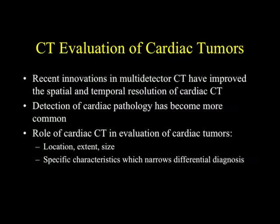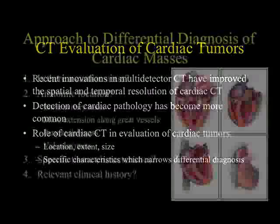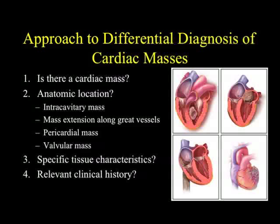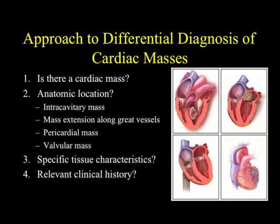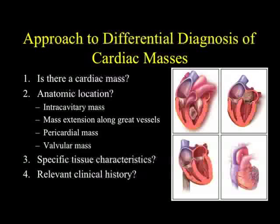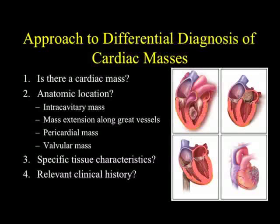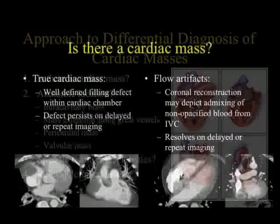The first thing you're going to look at is: is there a cardiac mass present? Where is it located — is it within one of the chambers? Is it extending along the great vessels and growing into the heart? Is it in the pericardium? Is it a valvular process? What about its tissue type — is it fat, does it have calcifications? Is there any relevant clinical history? For example, a patient with renal cell carcinoma, lung cancer, or melanoma — those may be very critical histories.